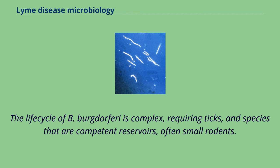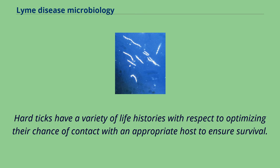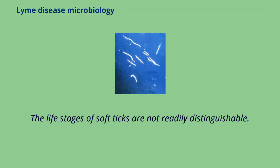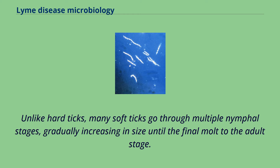The life cycle of B. burgdorferi is complex, requiring ticks and species that are competent reservoirs, often small rodents. Mice are the primary reservoir for the bacteria. Hard ticks have a variety of life histories with respect to optimizing their chance of contact with an appropriate host to ensure survival. The life stages of soft ticks are not readily distinguishable. The first stage to hatch from the egg, a six-legged larva, takes a blood meal from a host and molts to the first nymphal stage. Unlike hard ticks, many soft ticks go through multiple nymphal stages, gradually increasing in size until the final molt to the adult stage.